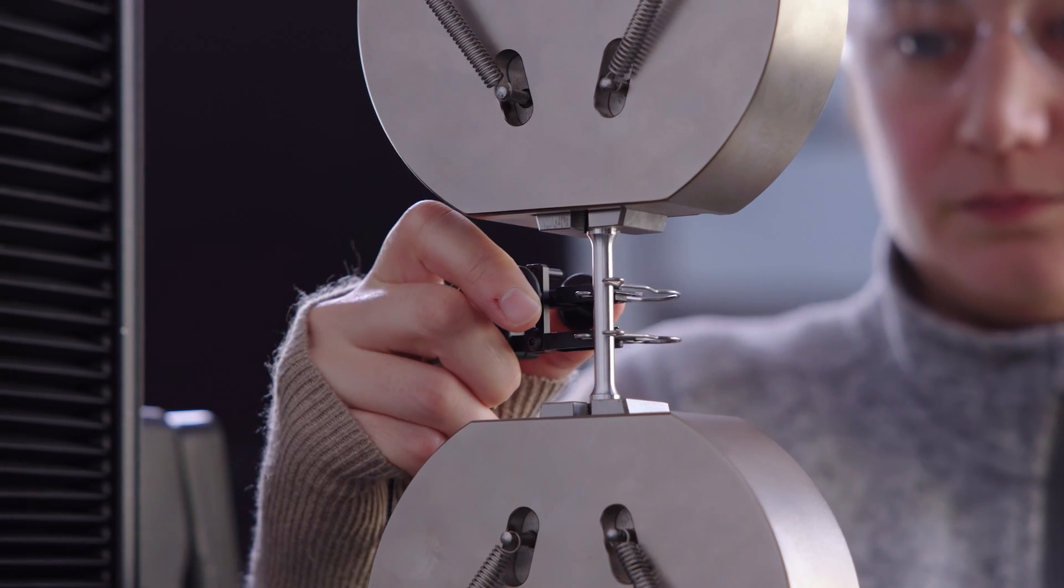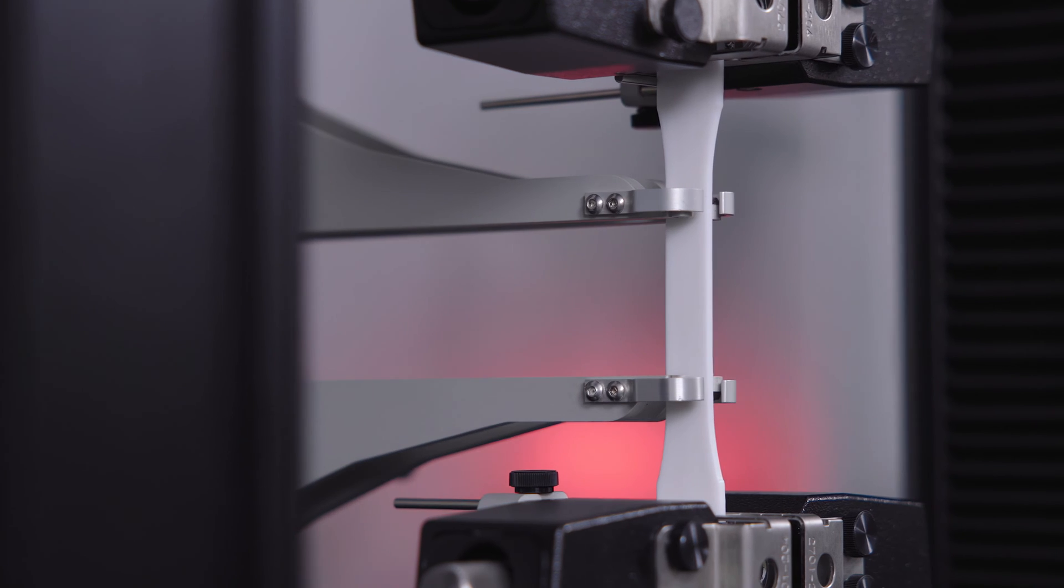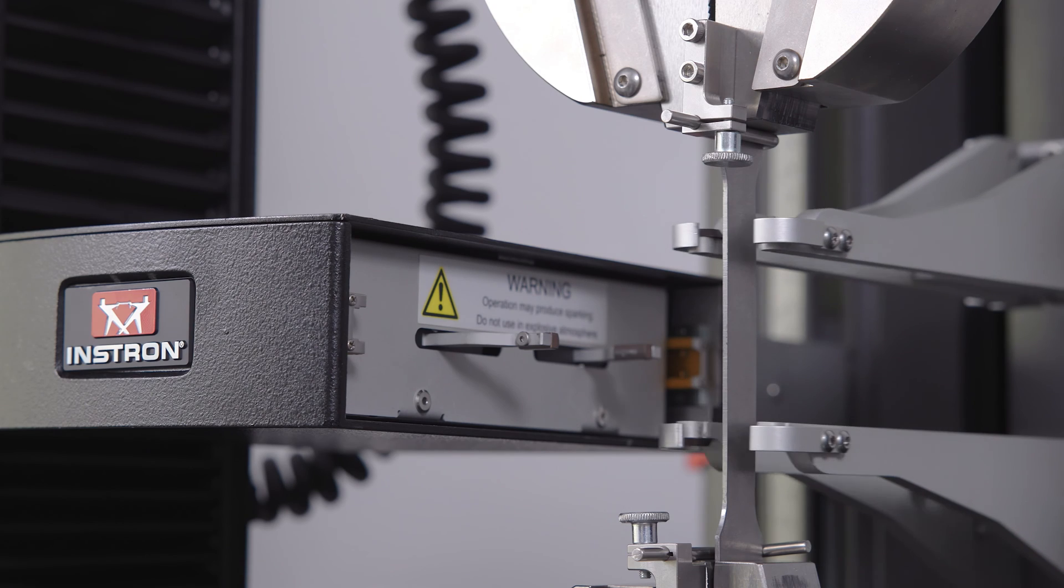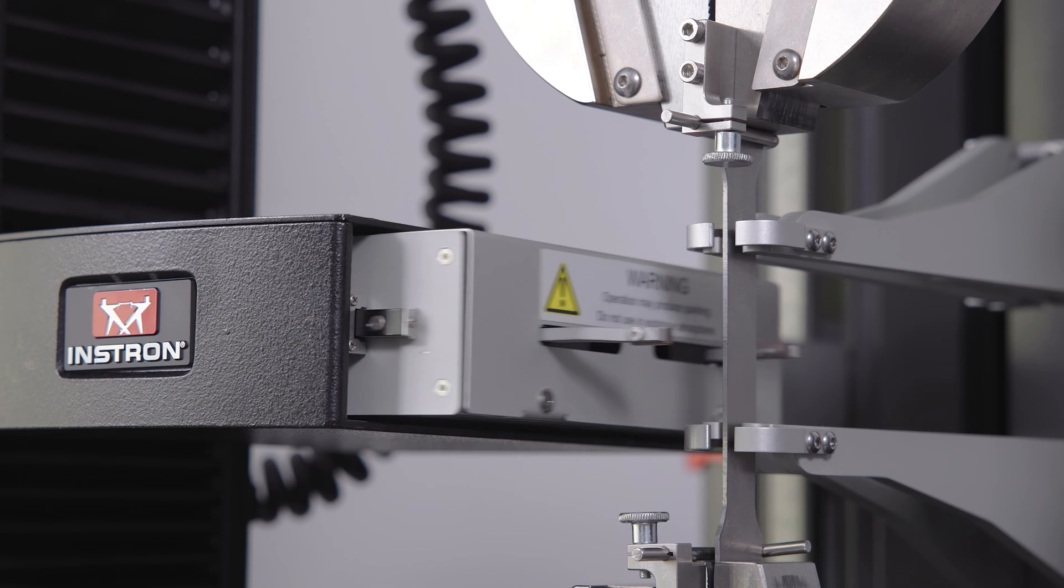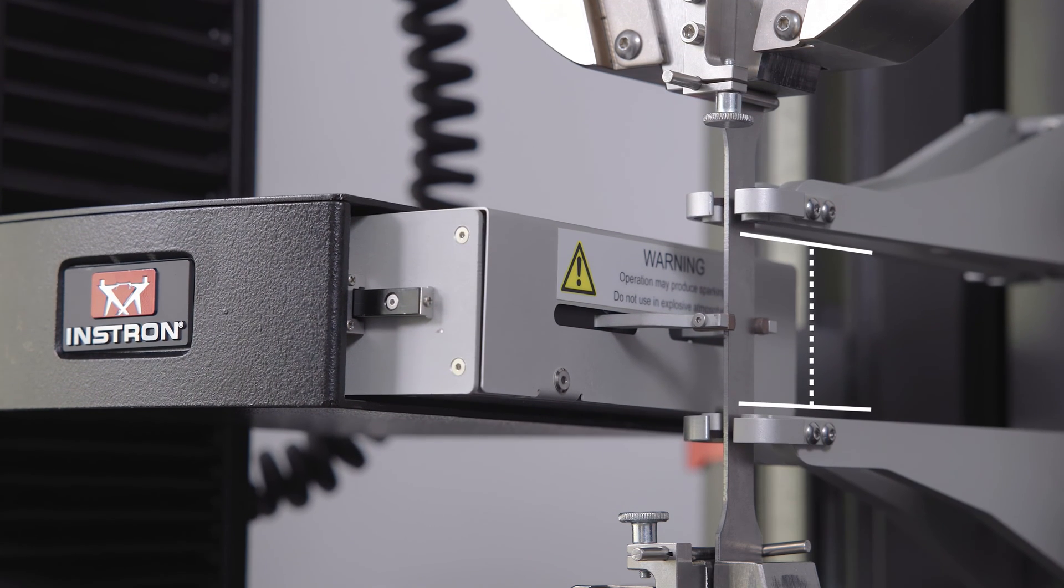Contacting extensometers can either be clipped onto the specimen or attach automatically. These devices use thin knife edges to touch the specimen, with strain measurement being determined based on the change in distance between the extensometer arms during testing.